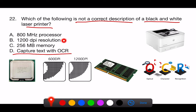B. 1200 DPI resolution. DPI stands for dots per inch, a measure of print resolution. A 1200 DPI resolution is a common specification for a black and white laser printer, indicating its ability to produce sharp, detailed printed text and images.